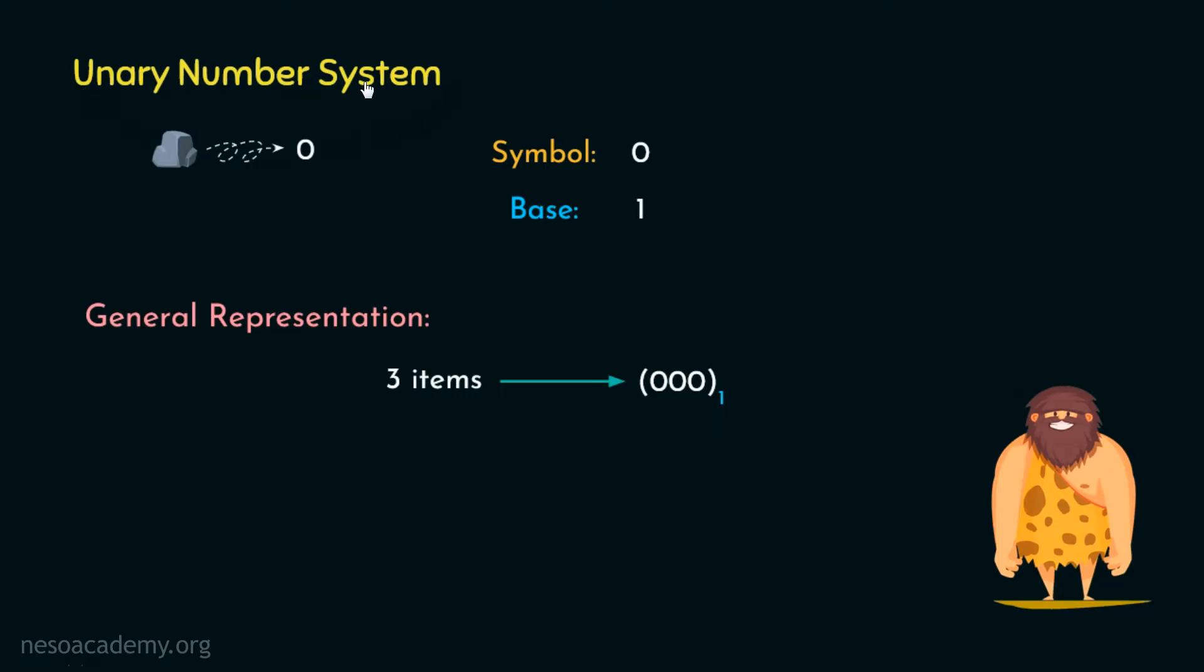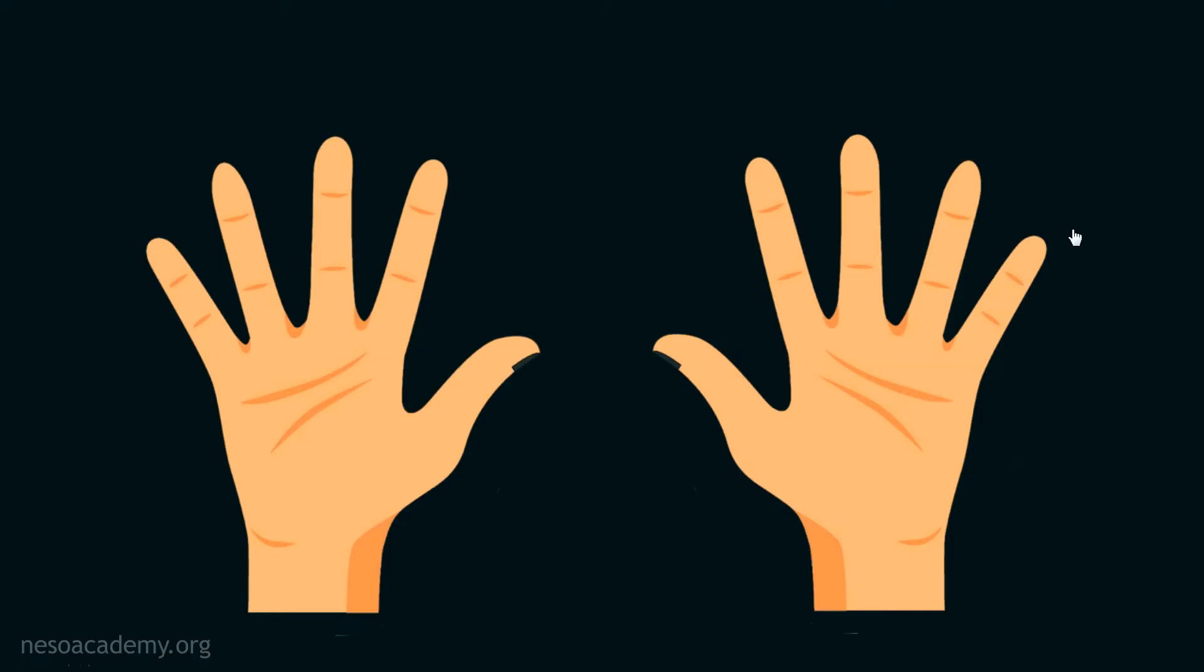Well, unary number system was popular in early days of humankind. As our brain started to develop, we noticed that we have five fingers in each hand. So ten fingers in total. We could use it for counting, right? So after a lot of research, debates, inventions, discoveries, we assigned some symbols to each of the finger.